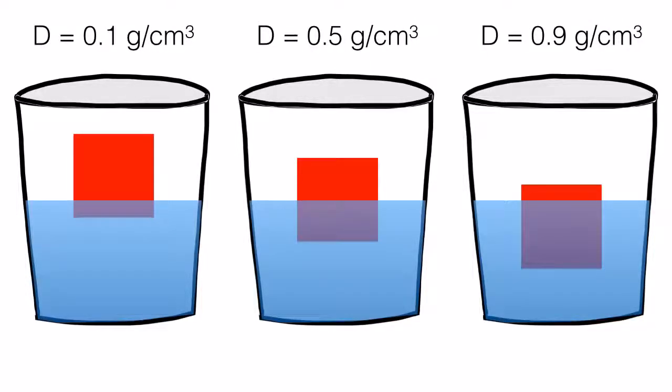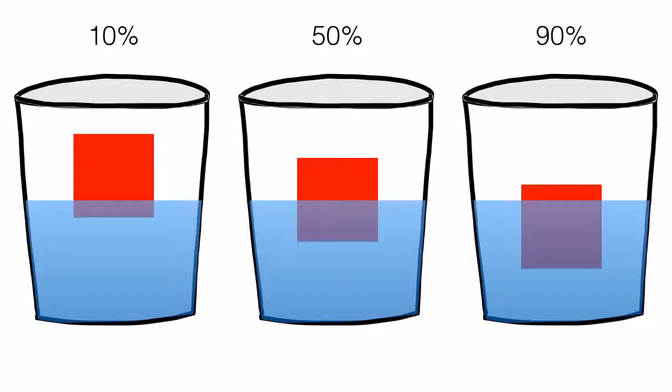But if you take a closer look, you see that as density increases, more of the block is below the waterline. Scientists have figured out the density of a block, converted to a percentage, is equal to the amount below the waterline.